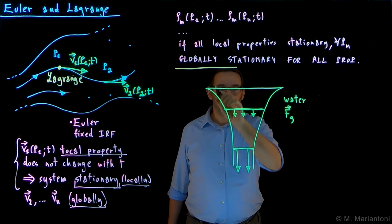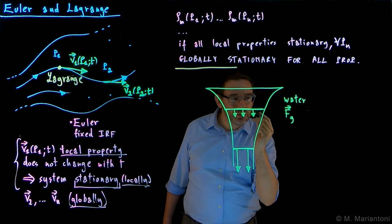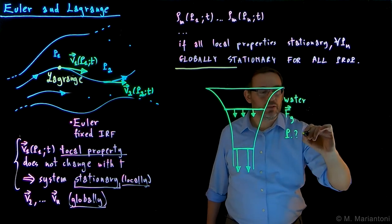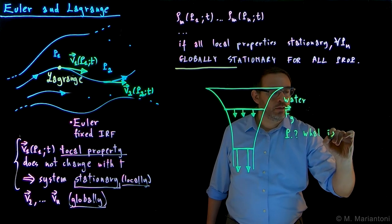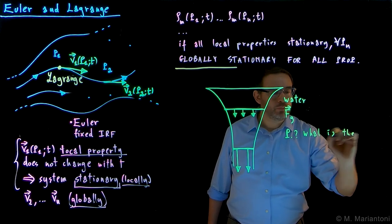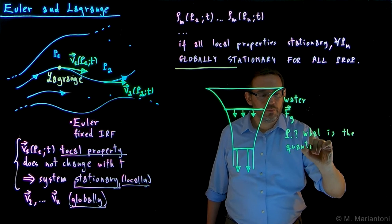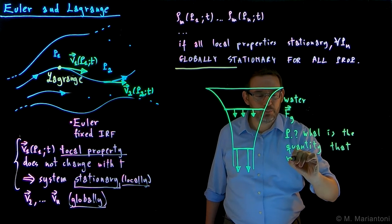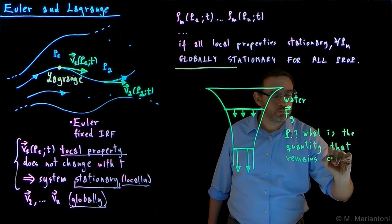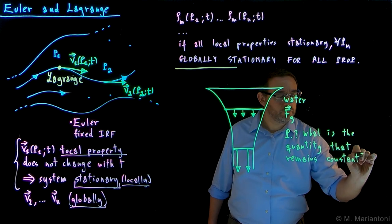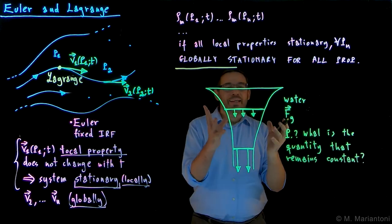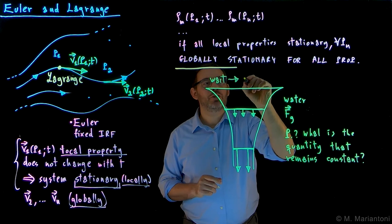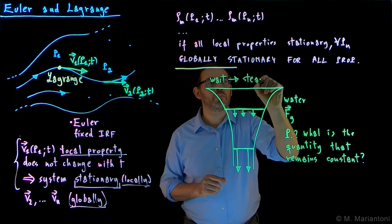Now, explain to me why the water ends up having this shape, and so in order to do so, the question which I have for you in Piazza really is, what is the quantity that is constant, that remains constant in this problem? Note that, as I said, you need to wait a little bit, so this wait time allows you to go over a transient to reach a steady or stationary condition.